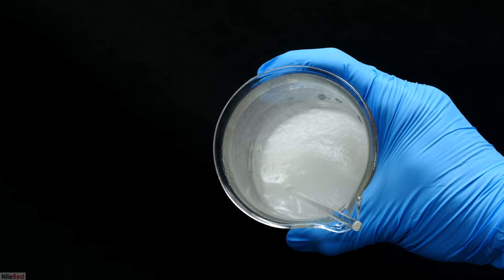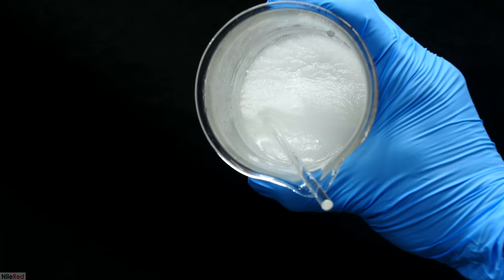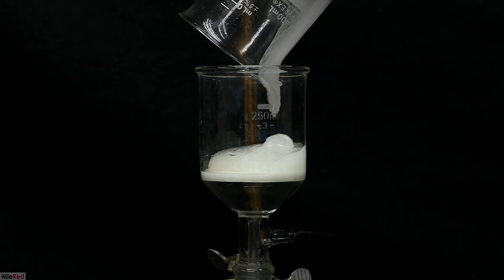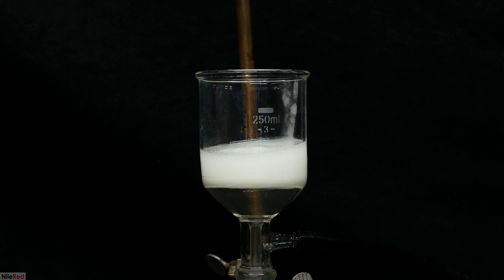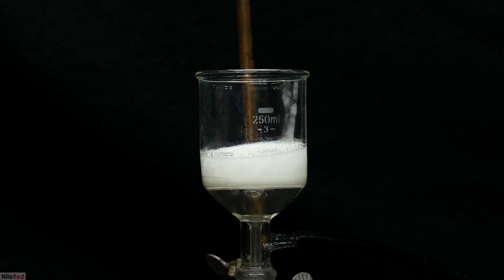In the morning, I was left with this nice viscous goop, which I then moved on to filtering. I poured out as much as I could into the filter, and I scraped out the rest using a glass stir rod. I turned on the vacuum and started to pull out the water. The goal here is to pull out the majority of the water, but it's going to be nearly impossible to pull out all of it.